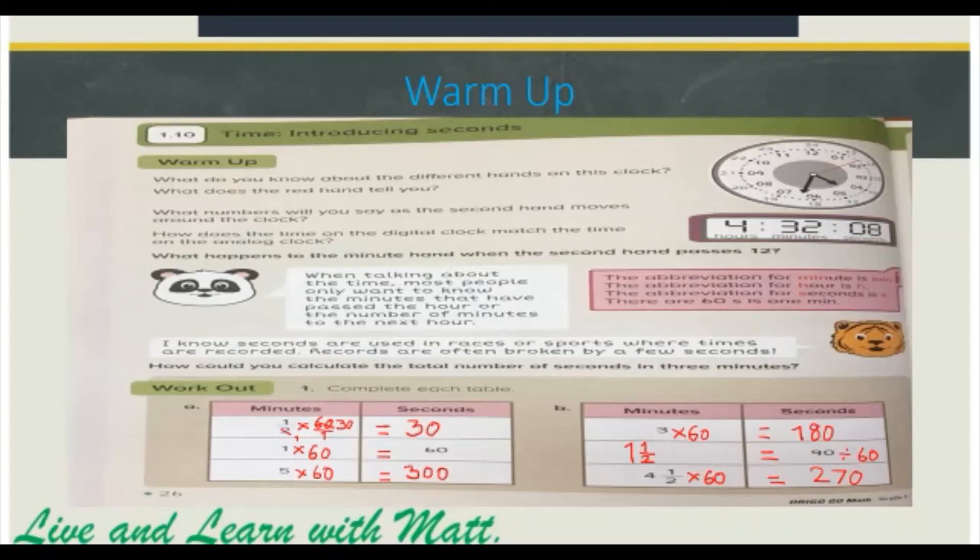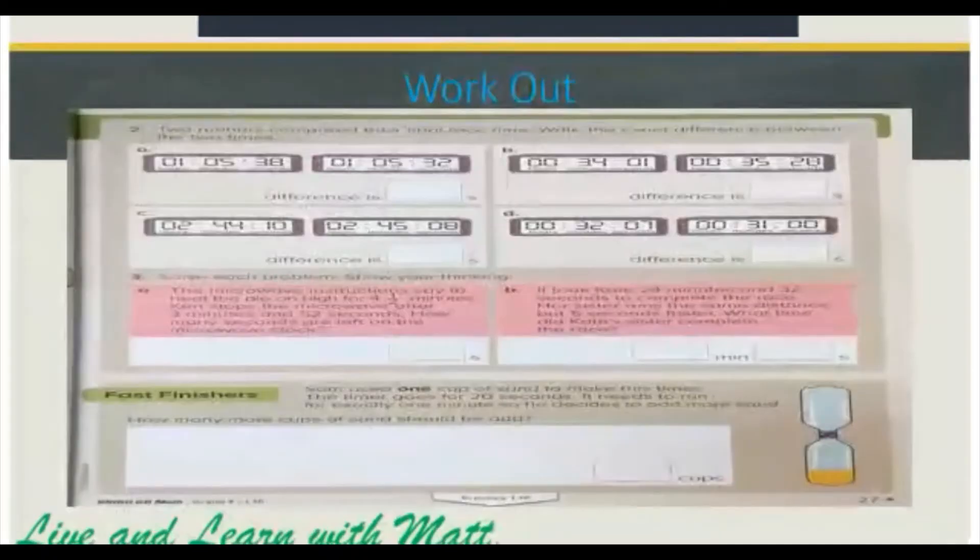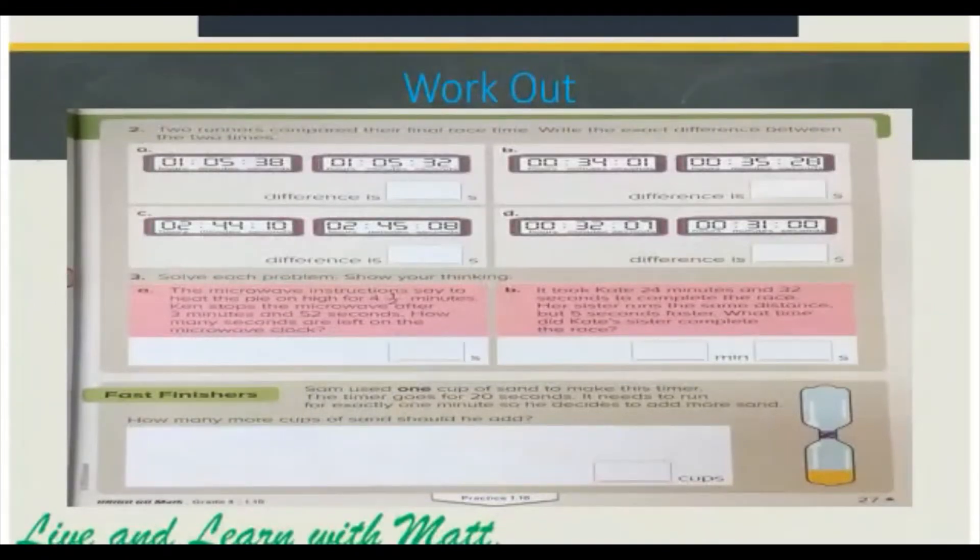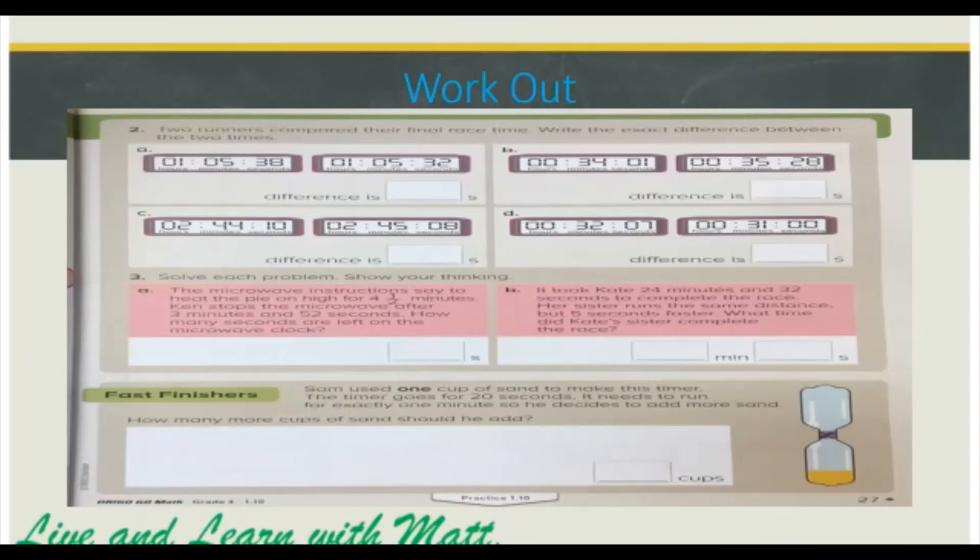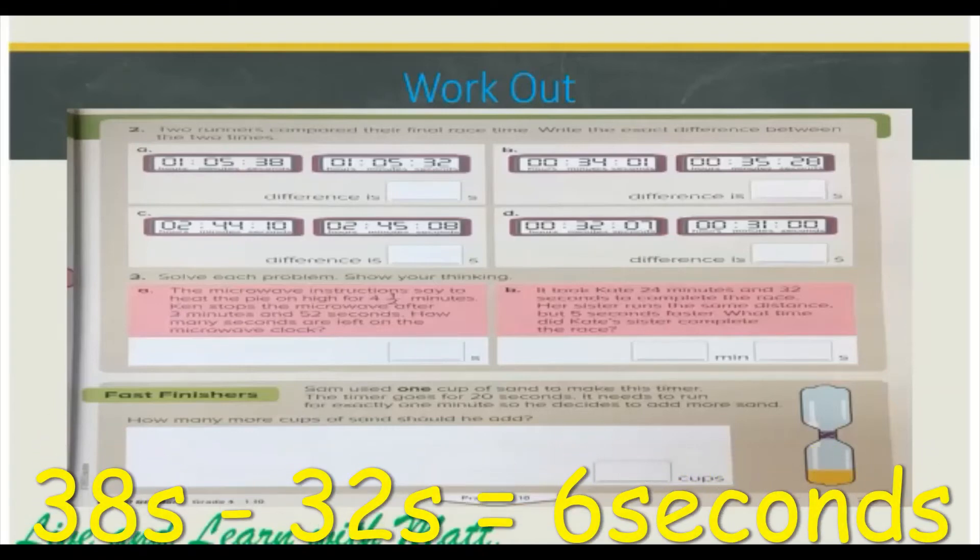Four and a half minutes will give us 270 seconds. Number two: two runners compared their final race time. Write the exact difference between the two times. So what is the difference between the two times? They both use one hour, they both use five minutes, and the seconds is the difference. So we calculate the seconds: 38 minus 32 will give us six seconds.